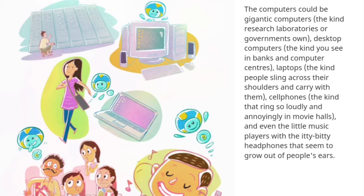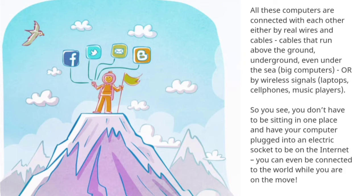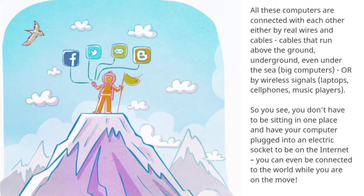So this is the entire network — all these computers are connected with each other, either by real wires and cables that run above the ground, underground, even under the sea; or by wireless signals for laptops, cell phones, and music players. You don't have to be sitting in one place with your computer plugged in to be on the Internet — you can even be connected to the world while you are on the move.